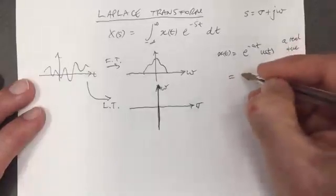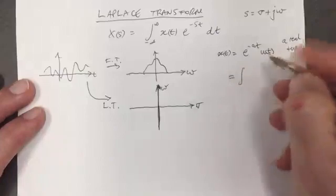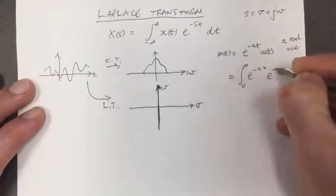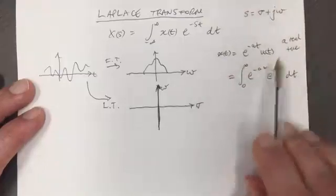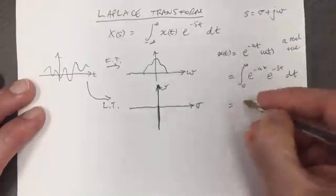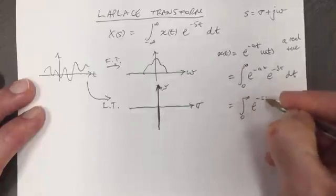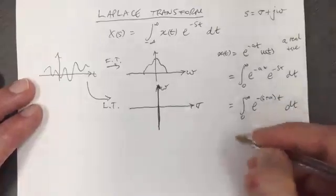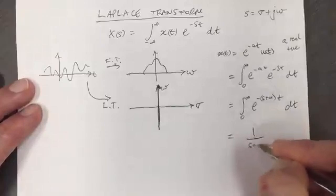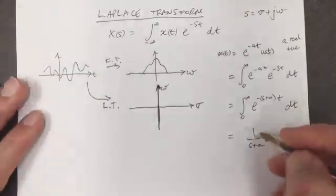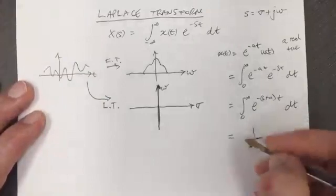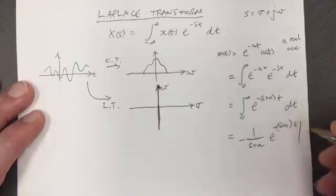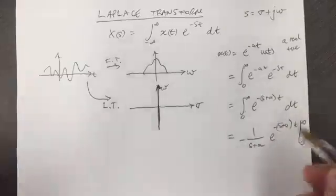Well, this is a step function so it only exists for positive values of t. So it's e to the minus at times e to the minus st dt because the step function equals one over that range. And then this is equal to the integral from zero to infinity of e to the minus (s plus a) times t dt. And now we try to do this integral and we're going to of course get one over (s plus a) with a minus at the front, multiplied by e to the minus (s plus a)t evaluated between zero and infinity.